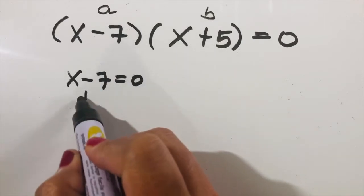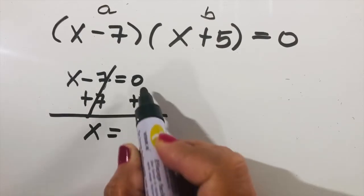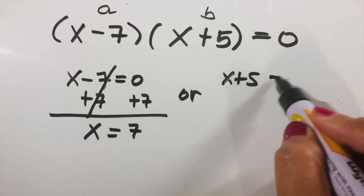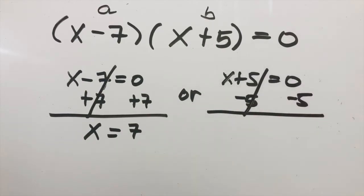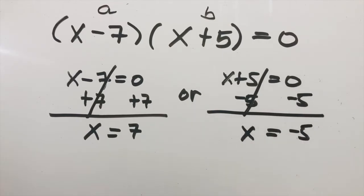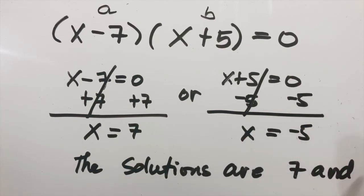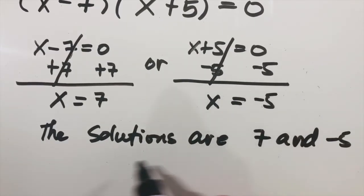For x minus seven equals zero, add seven on both sides: cross this out, bring down x, and zero plus seven is seven. For b, x plus five equals zero: subtract five on both sides, cross this out, so x equals zero minus five, which is negative five. Therefore, the solutions are x equals seven and x equals negative five.